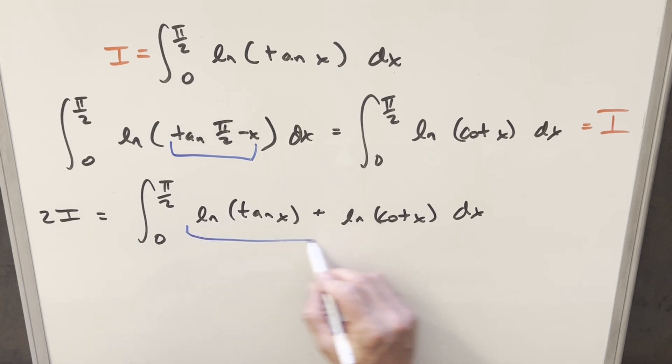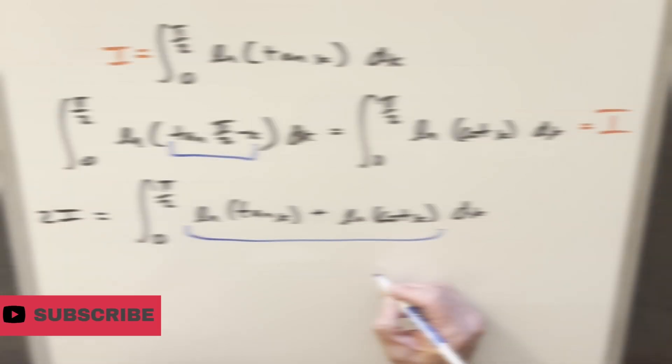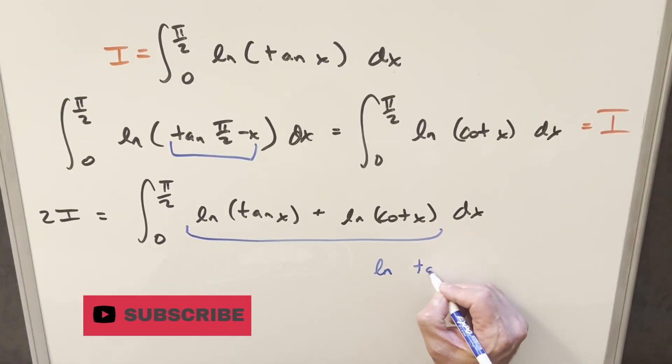But now for this thing right here, you may see what's happening. What we can do with log properties is because we're adding, we can actually multiply these two things together. So putting this together, we have natural log tan x times cotangent x.